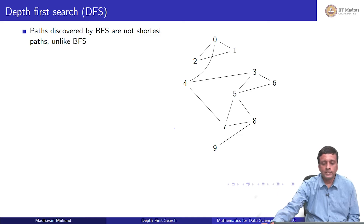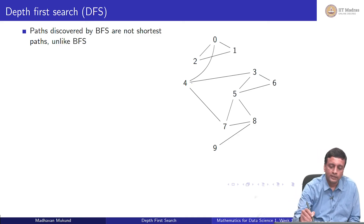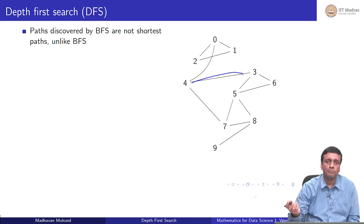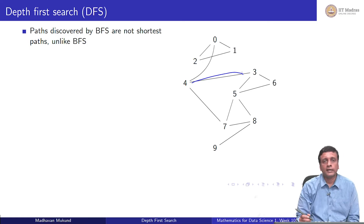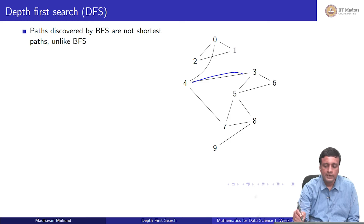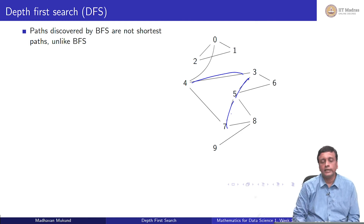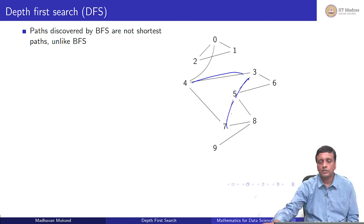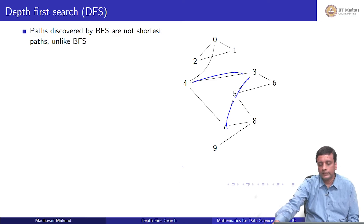Depth first search finds long paths. The path it found from 4 to 7 was: 4 triggered 3, 3 triggered 5, 5 triggered 7. If we had kept parent information — like in breadth first search — we would have said parent of 7 is 5, parent of 5 is 3, parent of 3 is 4. But this is obviously not the shortest path. So depth first search does not do what breadth first search does in terms of finding shortest paths.